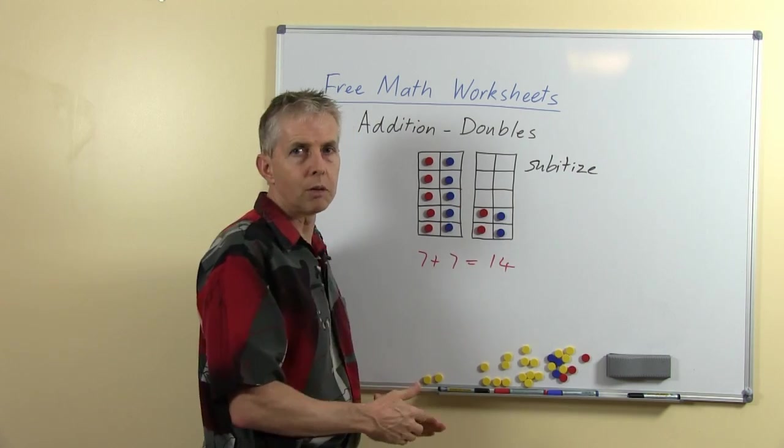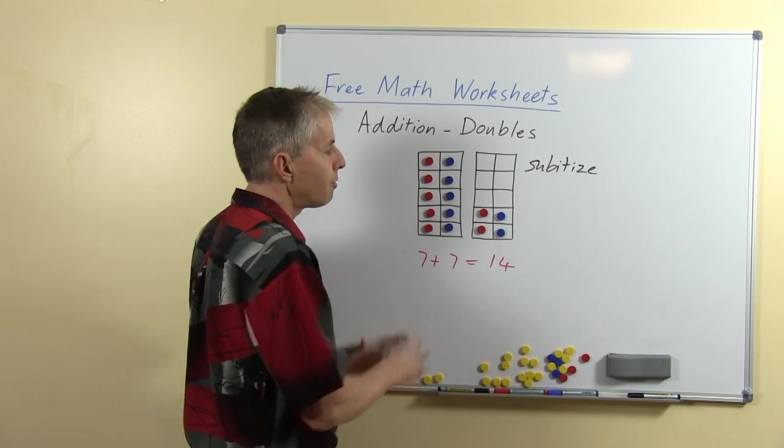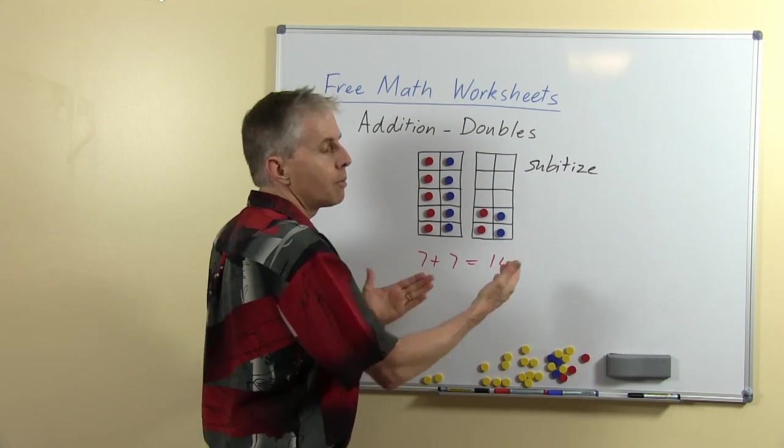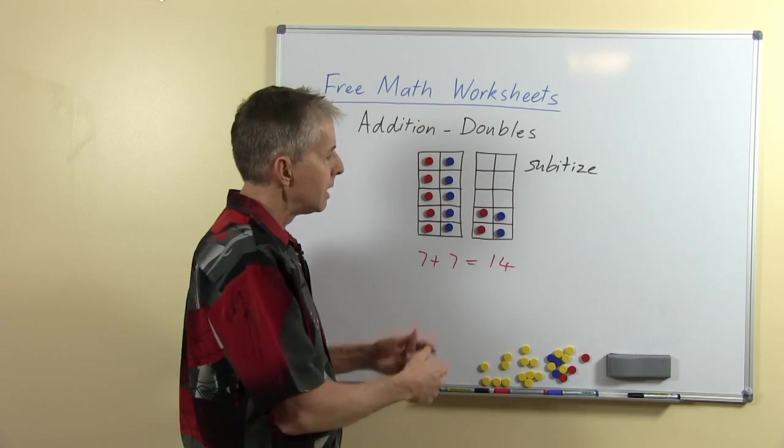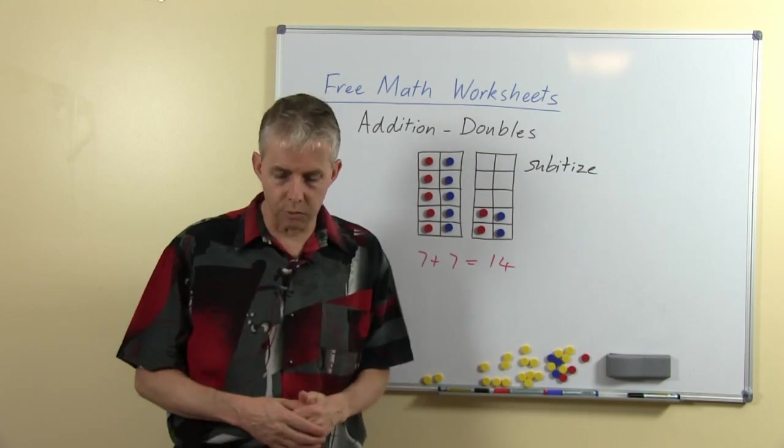Then whatever's left if we double that, in this case double 2 is 4, and so the double 10 frame lets the students quickly see, recognize, subitize the number 14. We can use it in that way to associate the double 7 with 14.